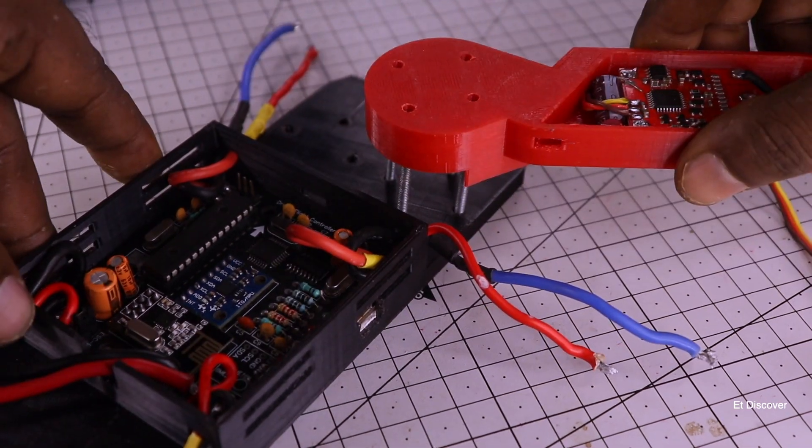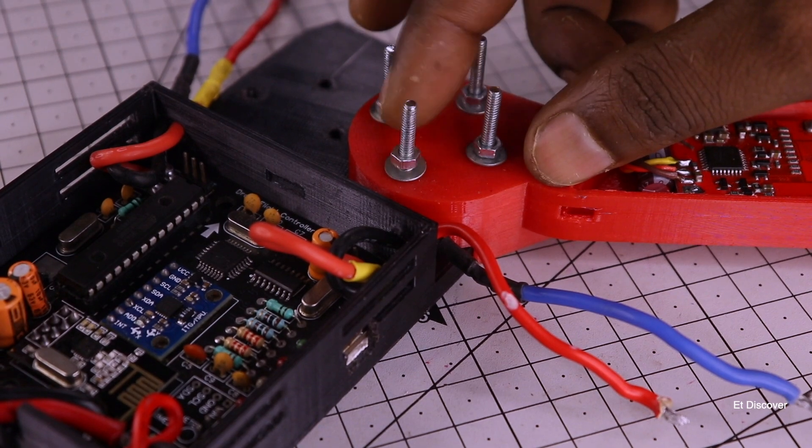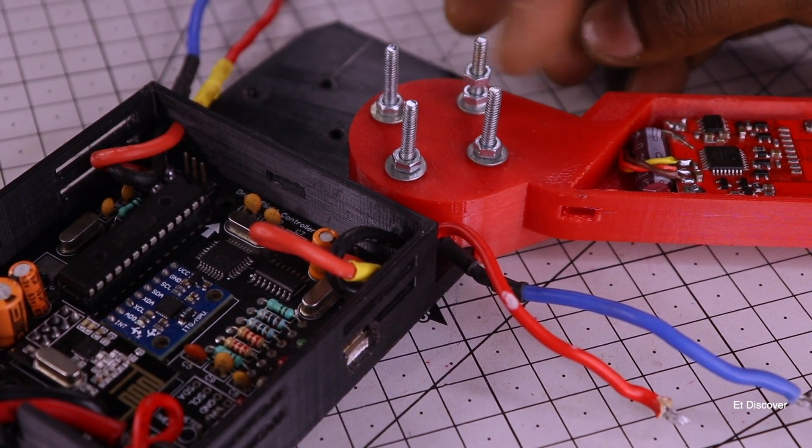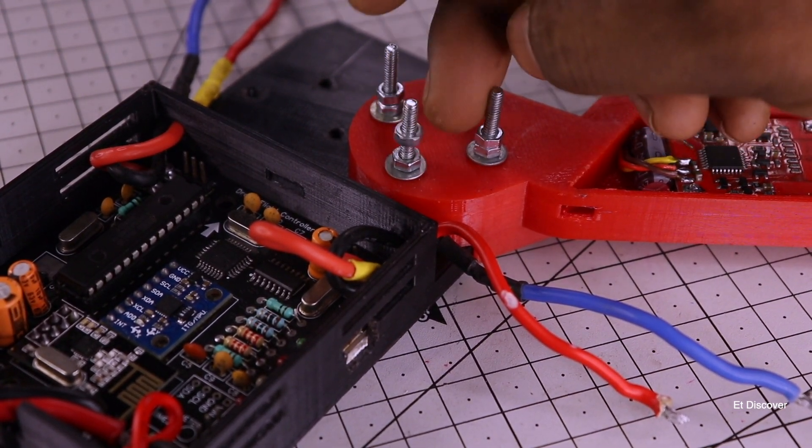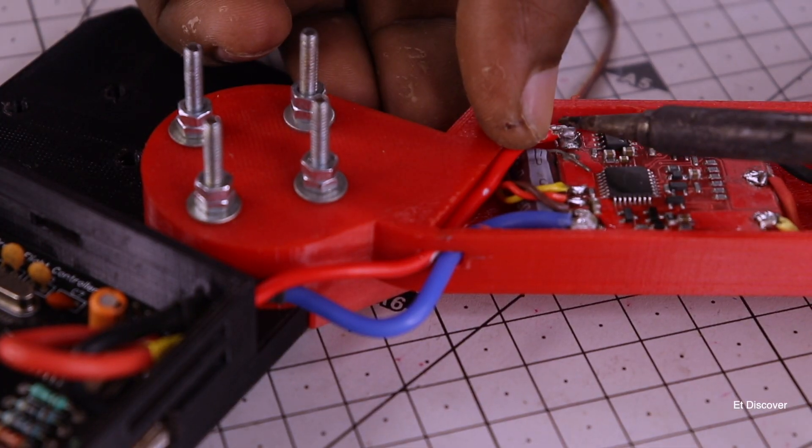After that I will put my hand on the nut in the mainframe. After that I fasten it tightly with bolts. Here I will use double bolts because I don't want to open my bolt in vibration of my motor. Then I will connect positive and negative wire with my ESC.